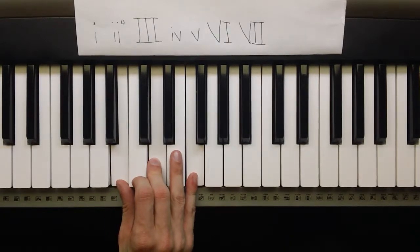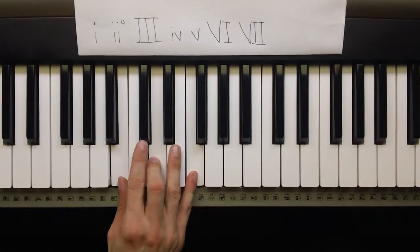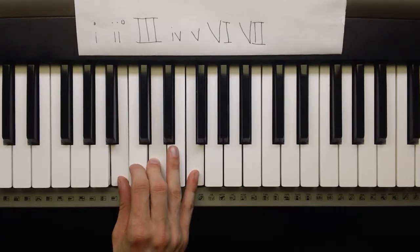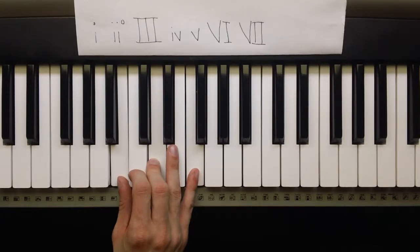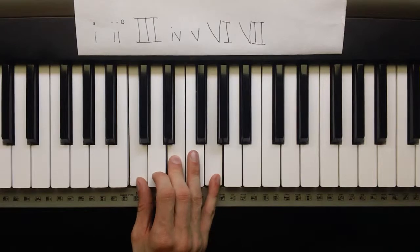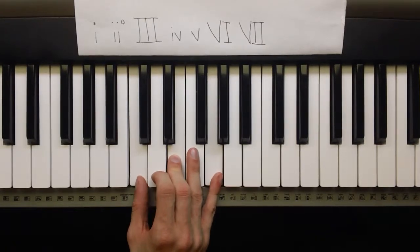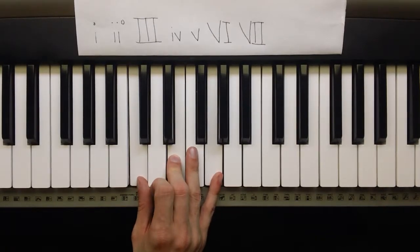The second note in the A minor scale is 2-2 diminished, so it gets a lowercase ii and a degree symbol next to it. The third one is major, so it gets capital III.